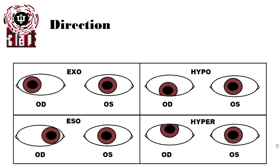Let's start with direction. There are essentially horizontal and vertical deviations that can happen at any time. Anybody could have an exo-deviation. An exo-deviation means one or both eyes are turned out. As we can see in the upper left-hand corner here, the right eye is turned out relative to the left eye. This is an exo-deviation.